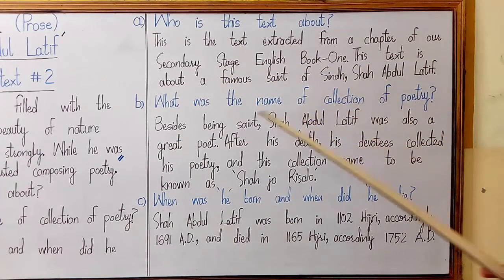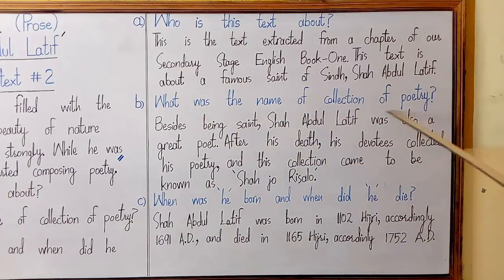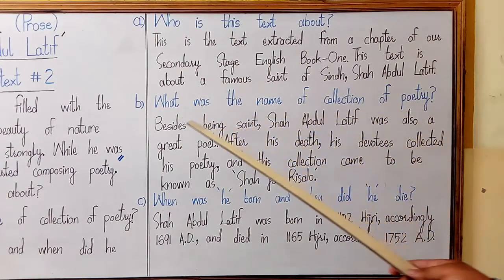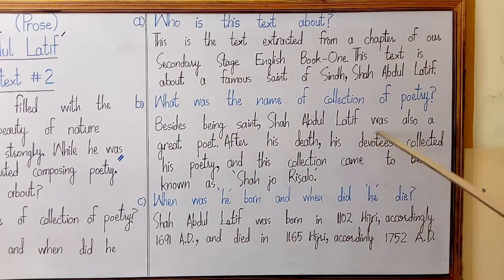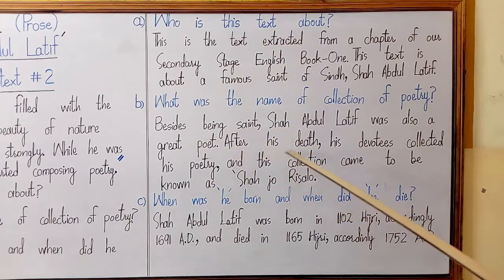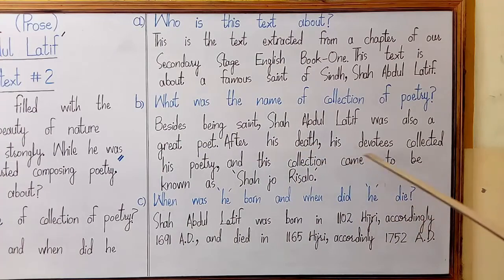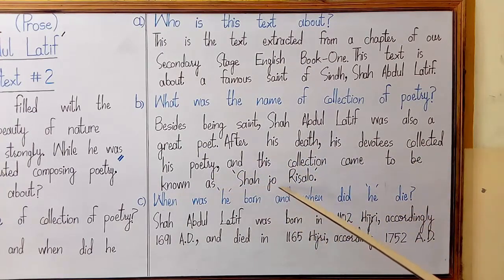Question number 2 — What was the name of the collection of poetry? The answer is: besides being a saint, Shah Abdul Latif was also a great poet. After his death, his devotees collected his poetry and this collection came to be known as Shah Jo Risalo.